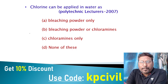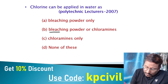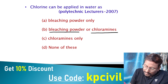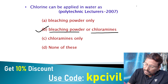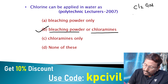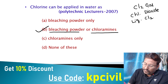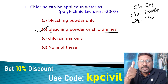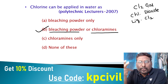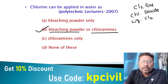Chlorine can be applied in water in five forms: bleaching powder, chloramines, chlorine gas, chlorine dioxide, and liquid chlorine.